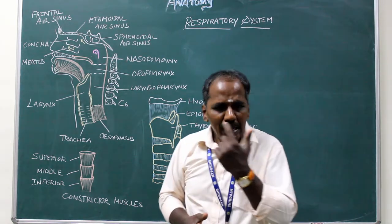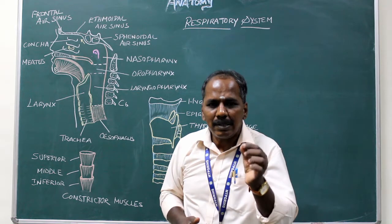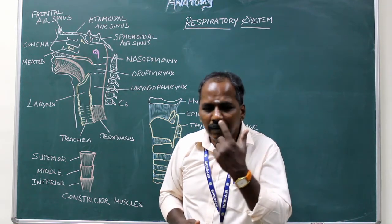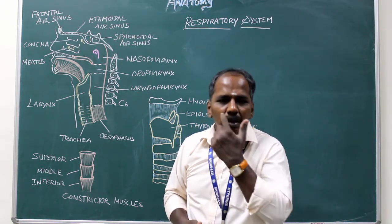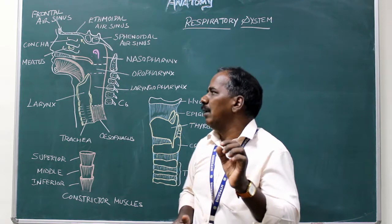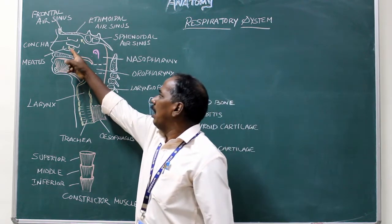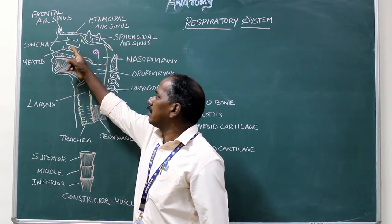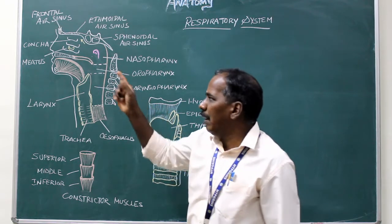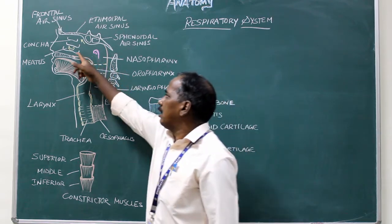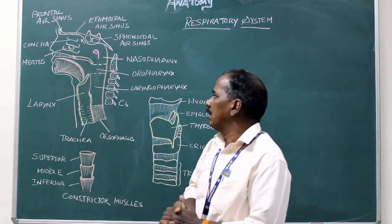Maxillary air sinus: It is the largest air sinus, present in the body of the maxilla — that is, the upper jaw. It drains into the hiatus semilunaris, that semilunar-shaped gap present in the middle meatus.